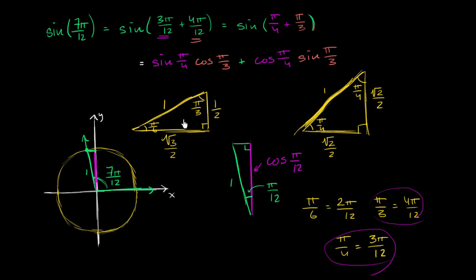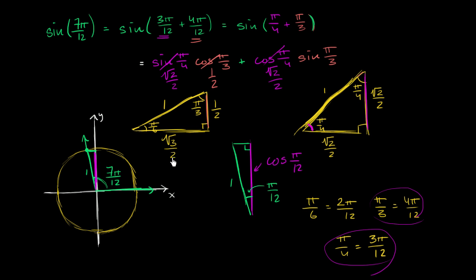Sine(π/4): opposite over hypotenuse from the 45-45-90 triangle gives √2/2. Cosine(π/3): adjacent over hypotenuse from the 30-60-90 triangle gives 1/2. Cosine(π/4): adjacent over hypotenuse from the 45-45-90 triangle gives √2/2. Sine(π/3): opposite over hypotenuse gives √3/2 divided by 1, which is √3/2.